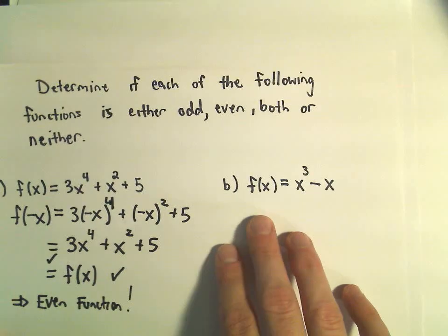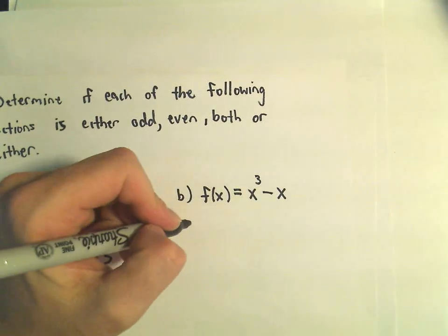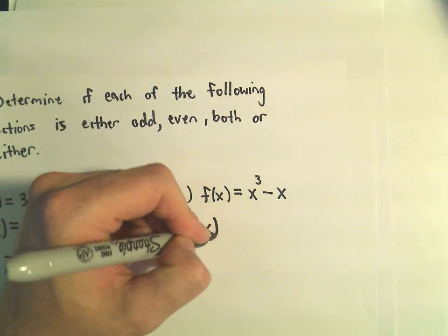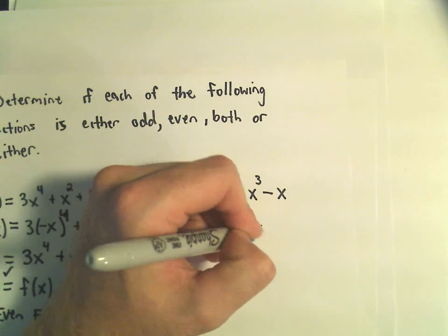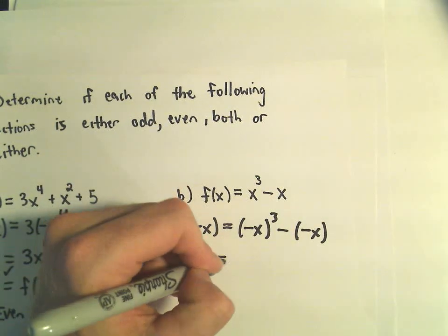Maybe one other one real quick. Suppose we have f of x equals x cubed minus x. Well, if we plug in negative x, we'll get negative x cubed minus negative x.